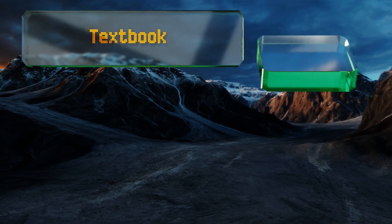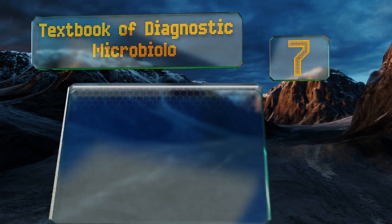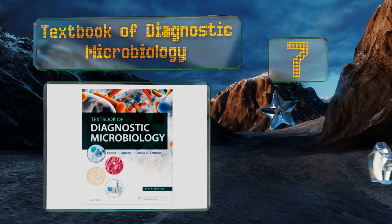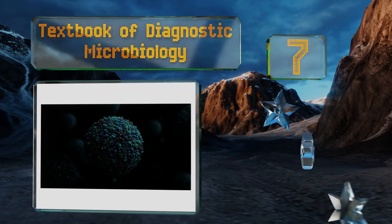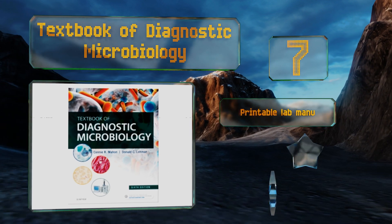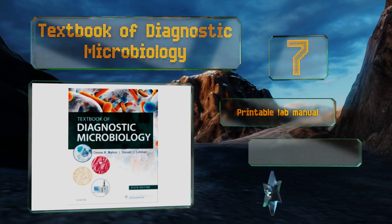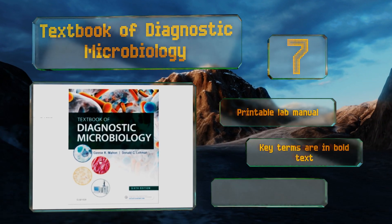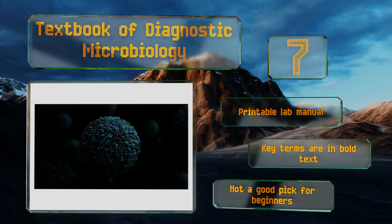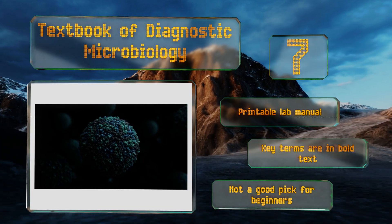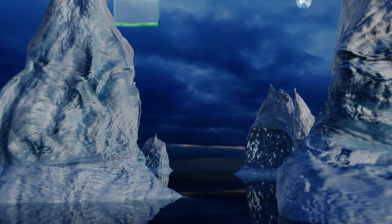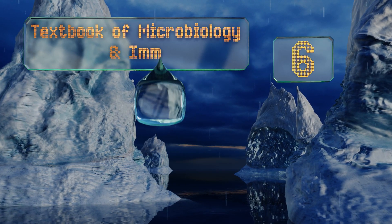At number 7: Textbook of Diagnostic Microbiology features content on pressing issues such as the Zika virus and the most current guidelines from the Center for Disease Control, making this a great choice for serious academics and those who've taken prior university classes. It includes a printable lab manual and key terms in clear bold text, but note that this one is not a good pick for beginners.